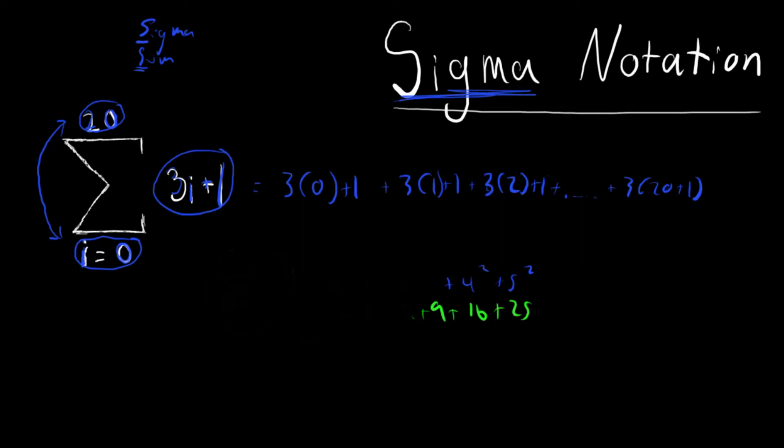So sigma notation also has a cousin, a sister more like it, called pi notation.